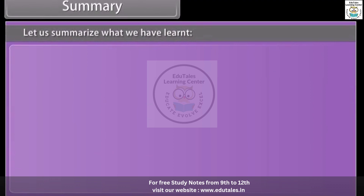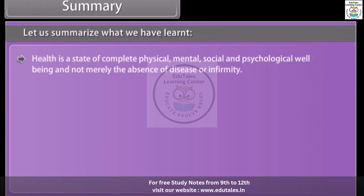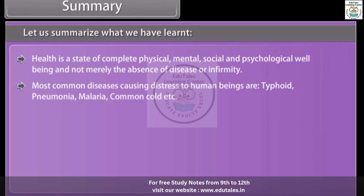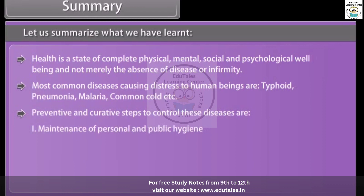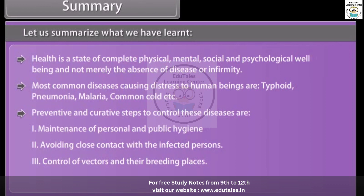Let us summarize what we have learned. Health is a state of complete physical, mental, social and psychological well-being, and not merely the absence of disease or infirmity. The most common diseases causing distress to human beings are typhoid, pneumonia, malaria, common cold, etc. Preventive and curative steps to control these diseases include maintenance of personal and public hygiene, avoiding close contact with infected persons, control of vectors and their breeding places, and use of vaccines and immunization programs.